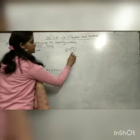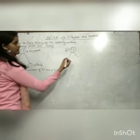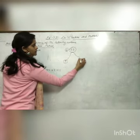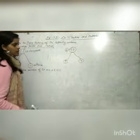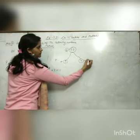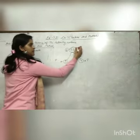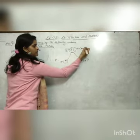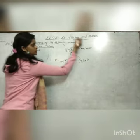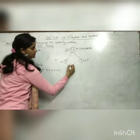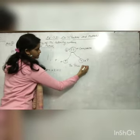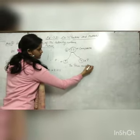Now let's take another example: number 35. Thirty-five equals 5 multiplied by 7. Five is a prime number, and 7 is also a prime number. So 35 factors are 5 and 7.